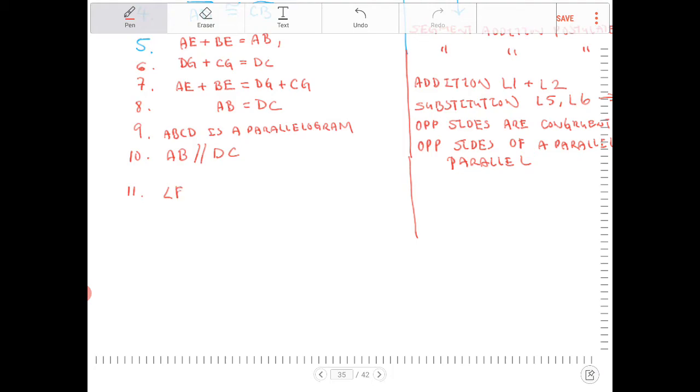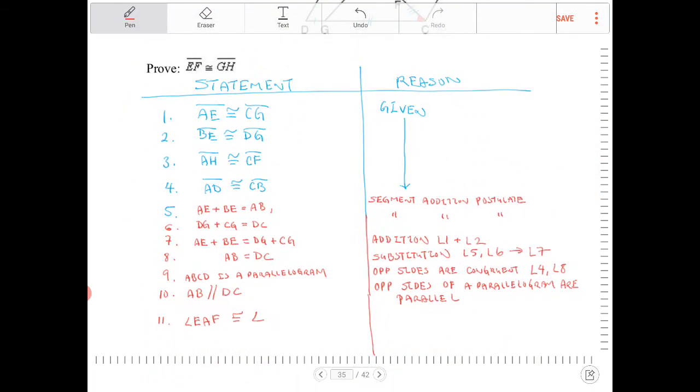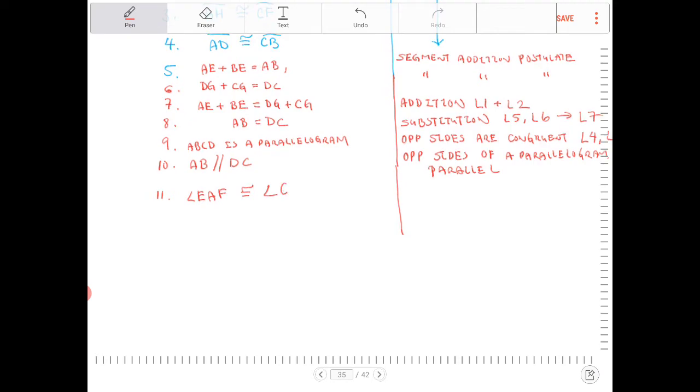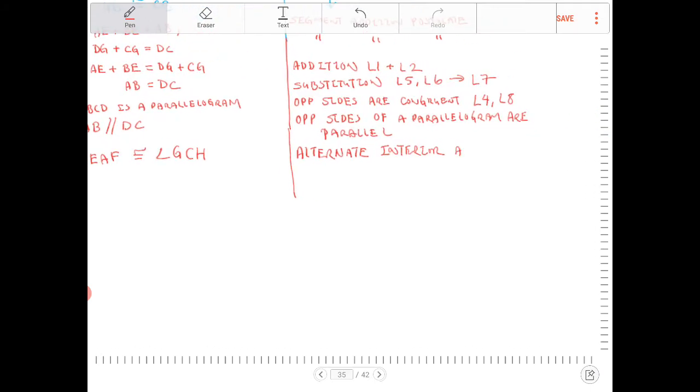And then in line 11, I can then say what I set out to say a moment ago, which was angle EAF is congruent to angle GCH. And this is because of alternate interior angles are congruent.